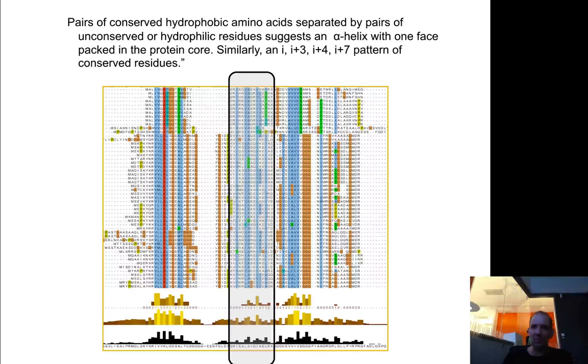And if you have more patterns, I plus three, I plus four, with hydrophobic residues, that would indicate that it's an alpha helix.